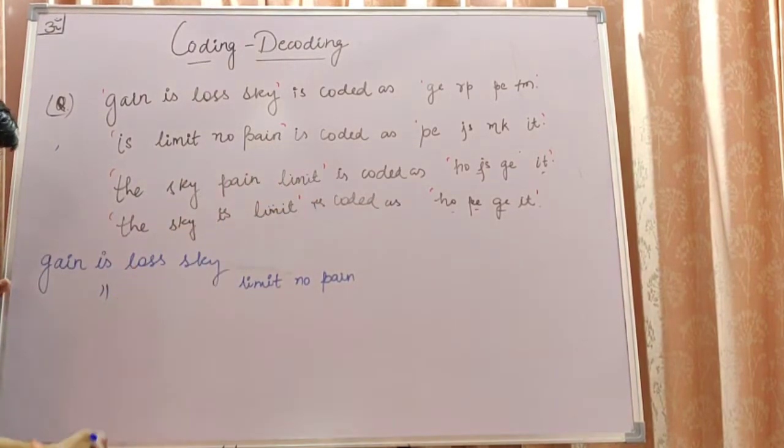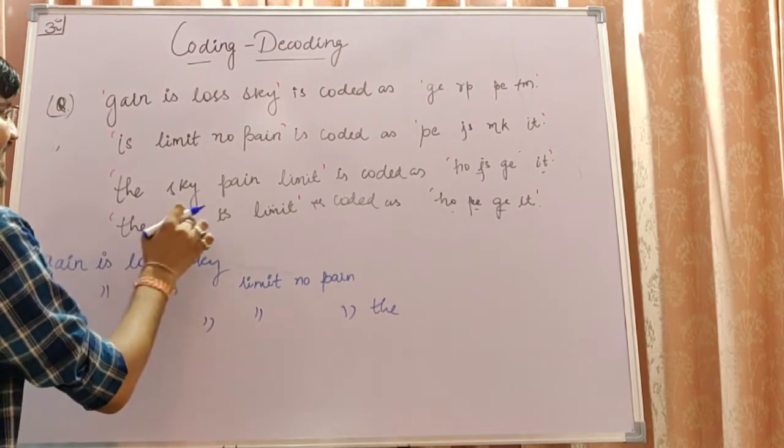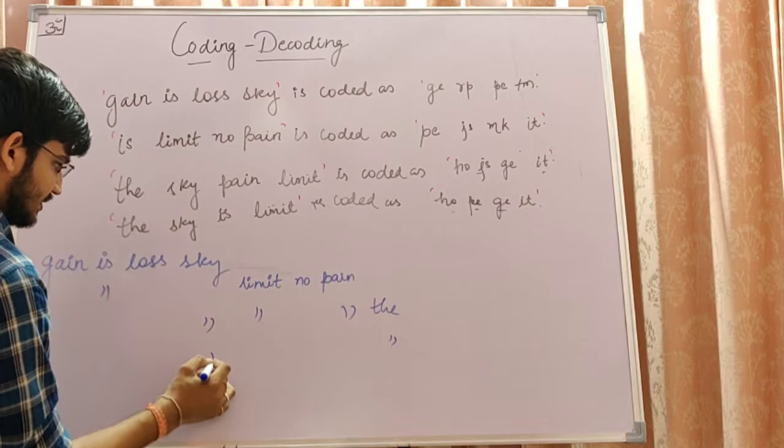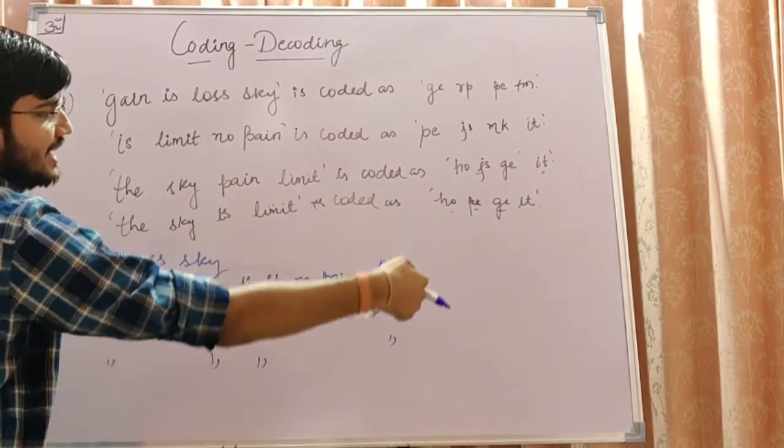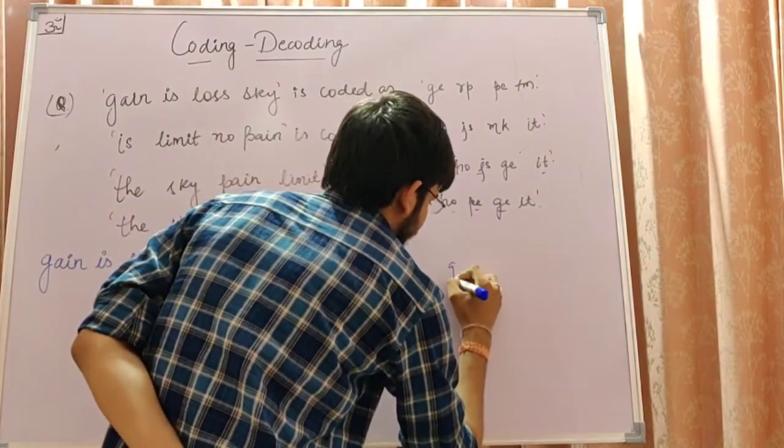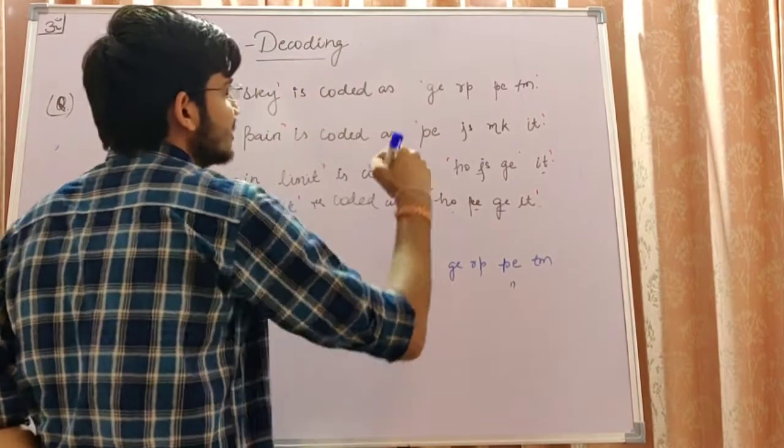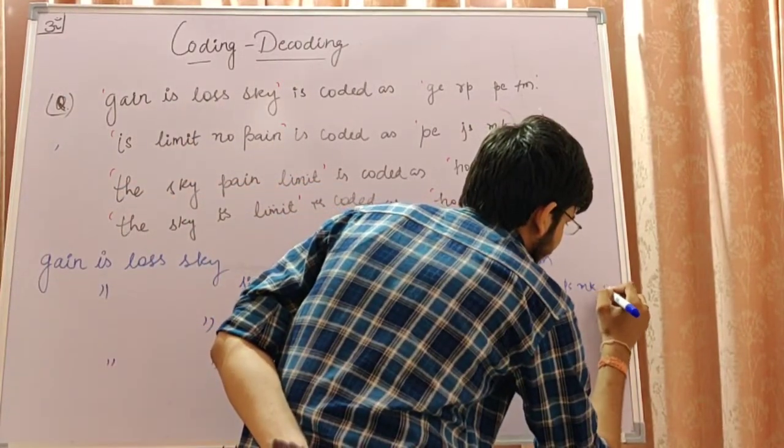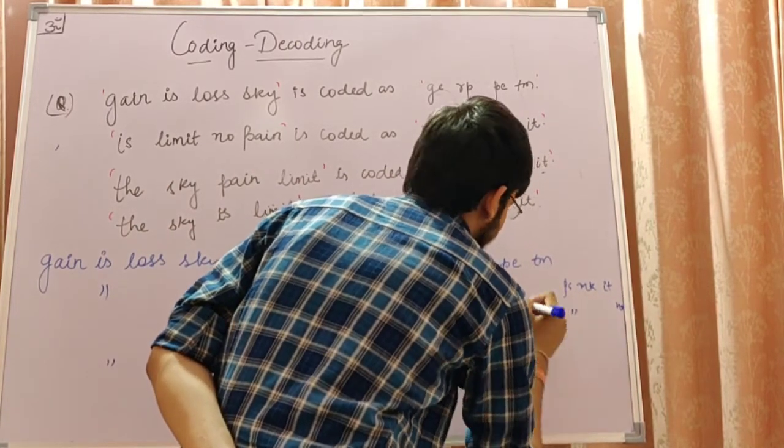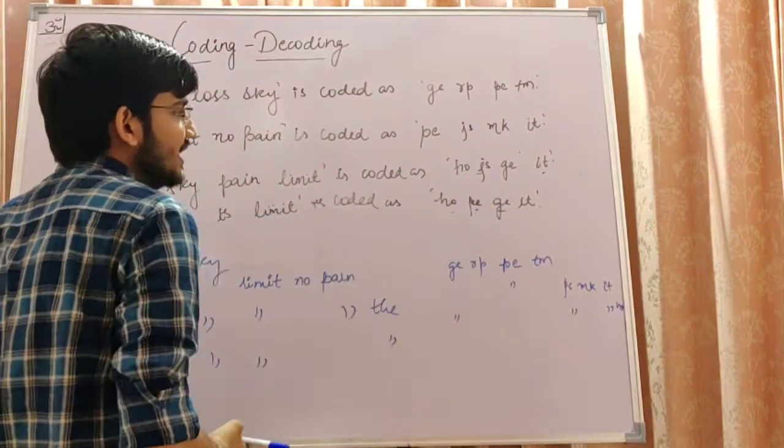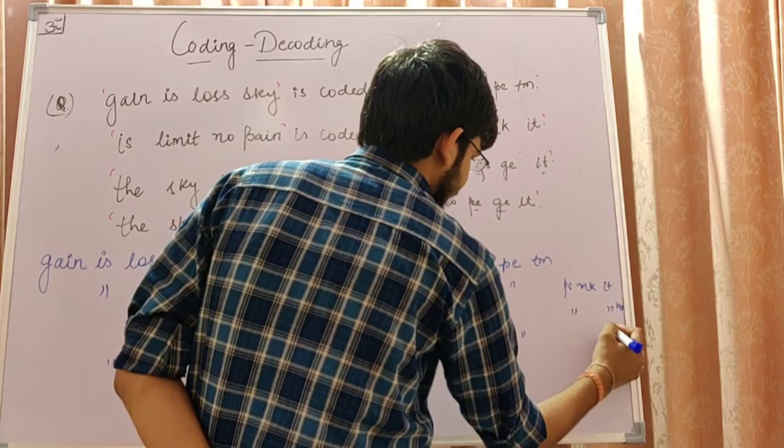Next, the sky pain limit. The sky, pain, limit. The sky is limit. The sky is limit. Now we are putting up the codes here. PJSMKIT, OJSGEIT, HOPEGEIT.